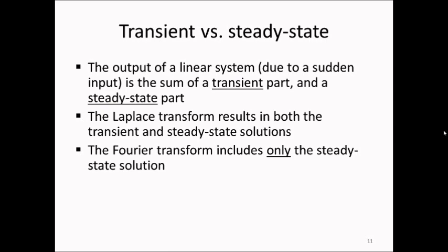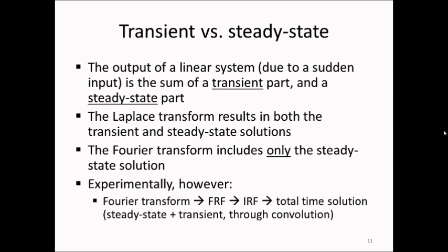This sometimes leads to a misunderstanding. Experimentally, we can use the Fourier transform to produce an FRF, which we will do in Chapter 13. When we have the frequency response function, we can take the inverse Fourier transform to obtain the impulse response. Having this impulse response, we can use the convolution integral to produce the total output solution for any input, including the transient part. The fact that we use the Fourier transform to produce the FRF does not mean we can only obtain steady-state solutions — it is only when we use the product X(f)·H(f) that we get only the steady-state spectrum Y(f).